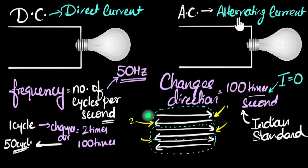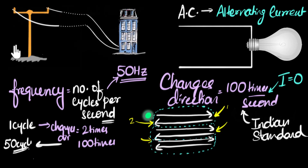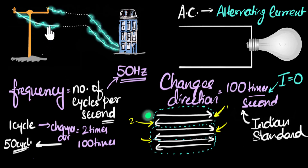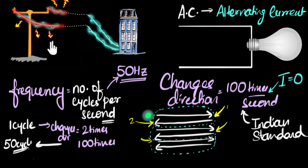Why even go for alternating current in the first place? Why can't we just go with direct current? It turns out it's got something to do with the efficiency of power transfer. The power station is very far away, so electricity has to travel a long distance. Since we have lots of houses, the electric current required will be very high, meaning the transmission cables would have to carry a lot of current. The problem with carrying a lot of current in the transmission wire is that it heats up the wire, causing a lot of heating. Heating is loss of energy — electrical energy is being converted to heat and wasted.